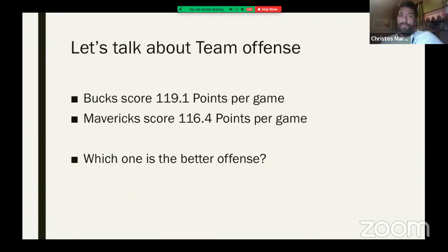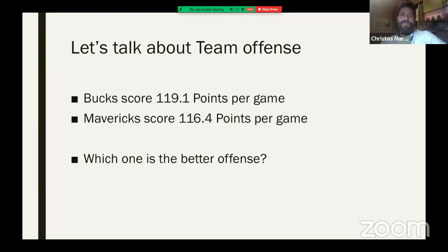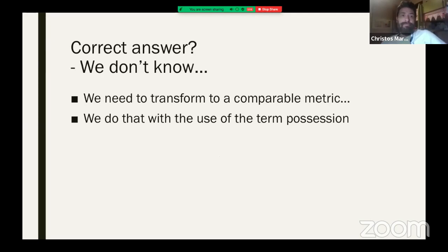Now let's talk about teams. The Bucks score 119.1 points per game, and the Mavericks score 116.4. Which one has the better offense? The answer is: I don't know, because you cannot compare how many points one team scores against another team — these are not comparable metrics. In order to compare them, we need to use the concept of possession.